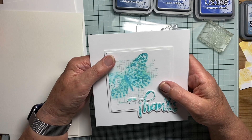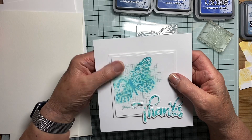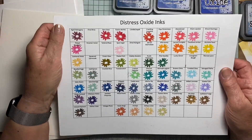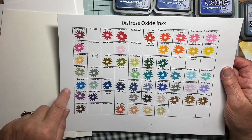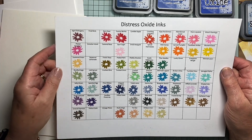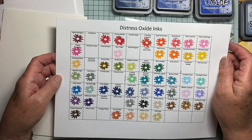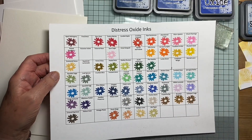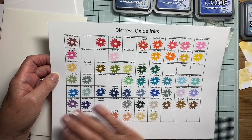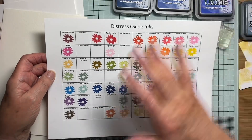I thought I would just show you a few of the results so you can have a look and see what happens. As far as distress inks are concerned, I haven't got the complete set, but what I've done is made a chart so that when I get a new ink pad I will put a dab onto my chart. I've put them not in alphabetical order — which is how I've got them stored as actual pads — but in colour family, so I can see what colours I might like to use with each other.